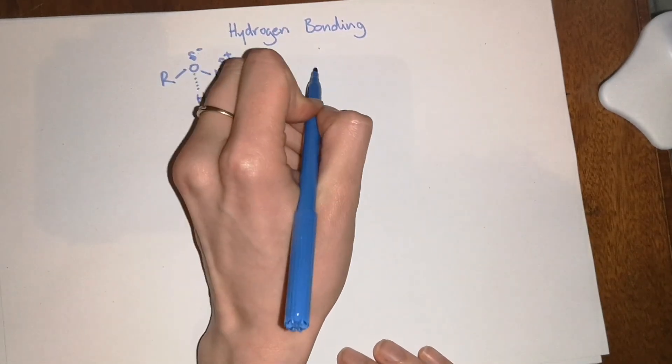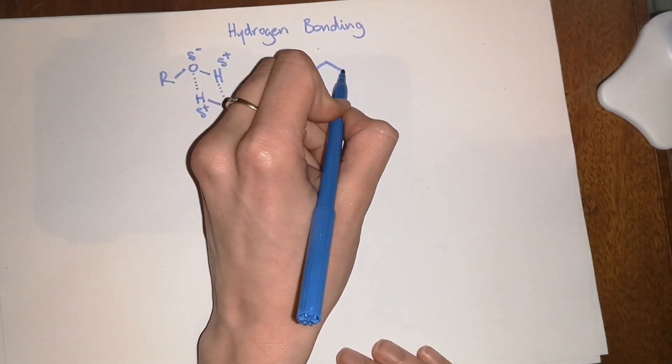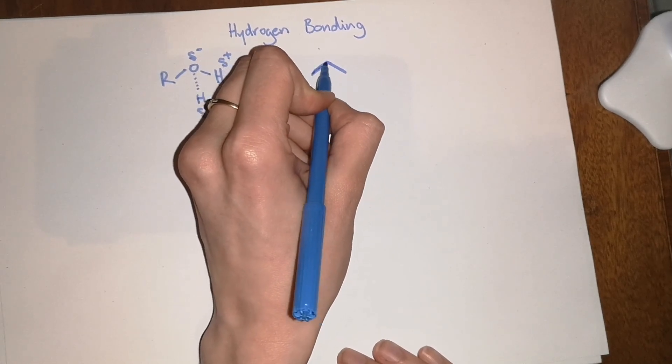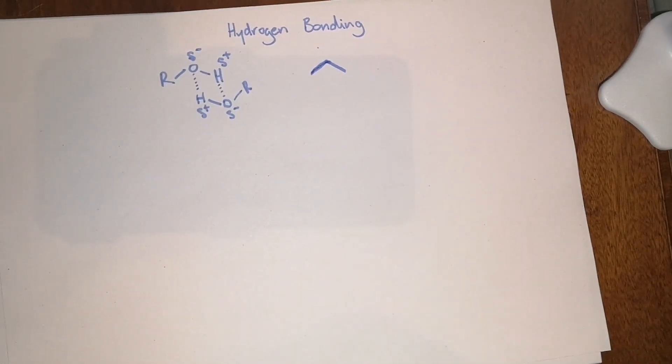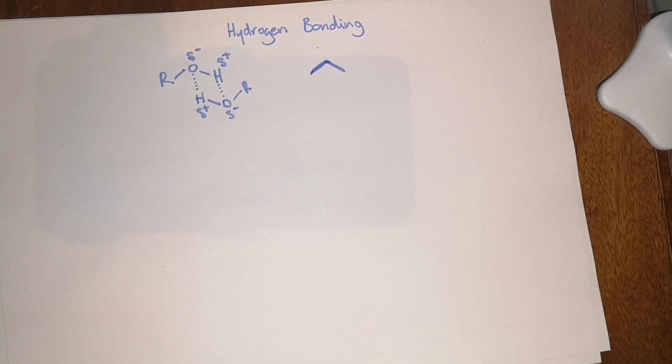So if you take this three carbon alkane, so this is propane, propane is typically a gas and it's very very volatile. That's why even at room temperature it's in a gaseous phase.